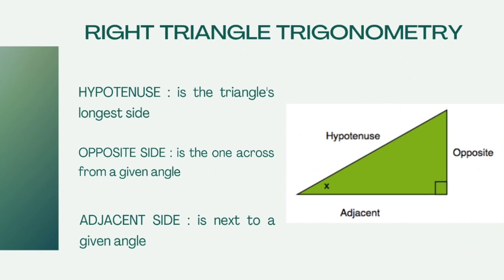Its parts are the hypotenuse, opposite side, and adjacent side. The hypotenuse is the triangle's longest side, while the opposite side is the one across from a given angle, and the adjacent side is next to a given angle.